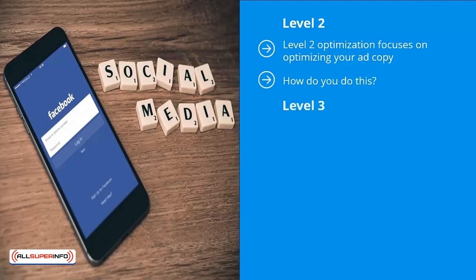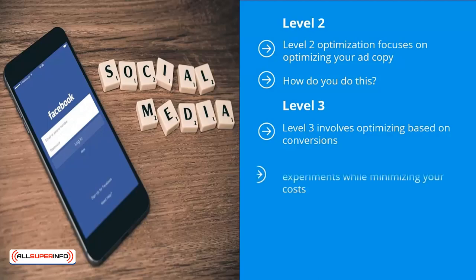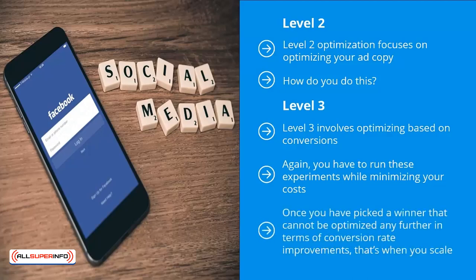Level three involves optimizing based on conversions. When people click your 'learn more' or 'sign up' button, they're shown a form. You'll need to keep tweaking that form to convert as much of your traffic into list members as possible. Run these experiments while minimizing costs. Once you find something that works, optimize it further. When you've picked a winner that can't be improved further, that's when you scale up and pour in the dollars to boost your mailing list signups.